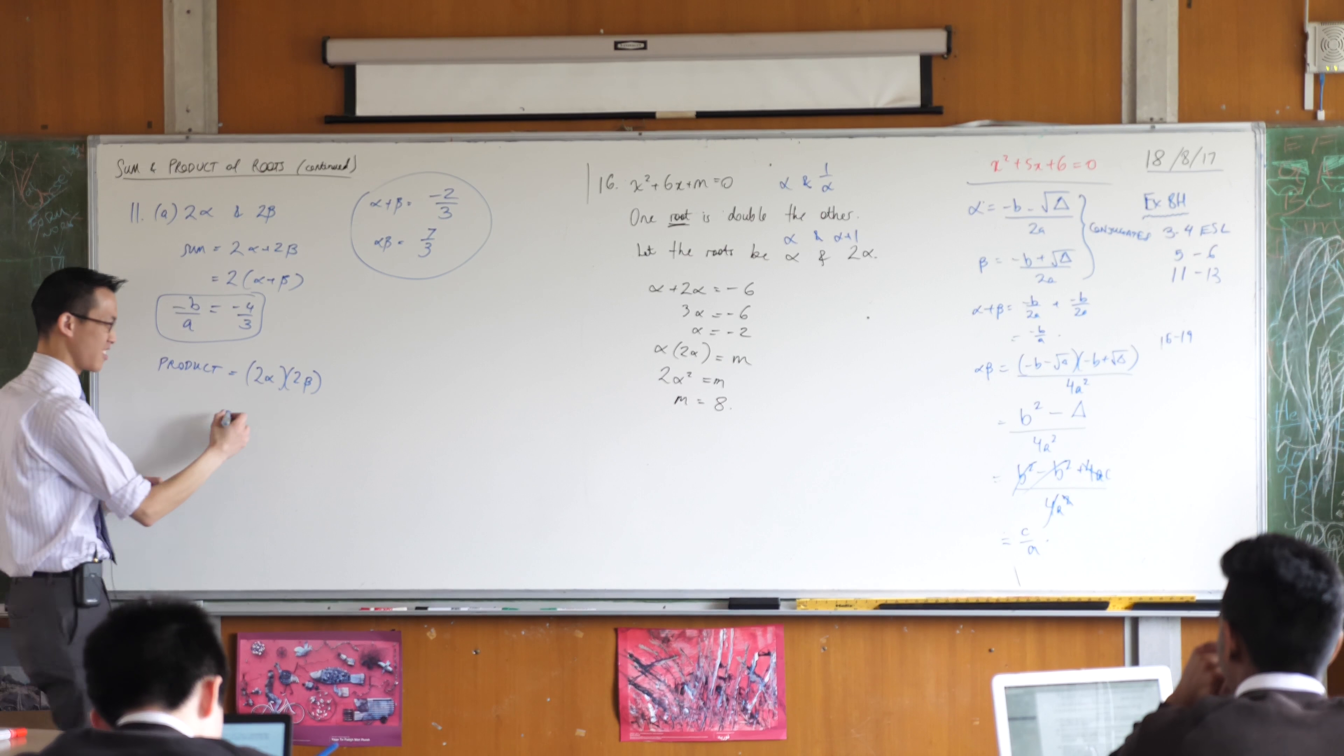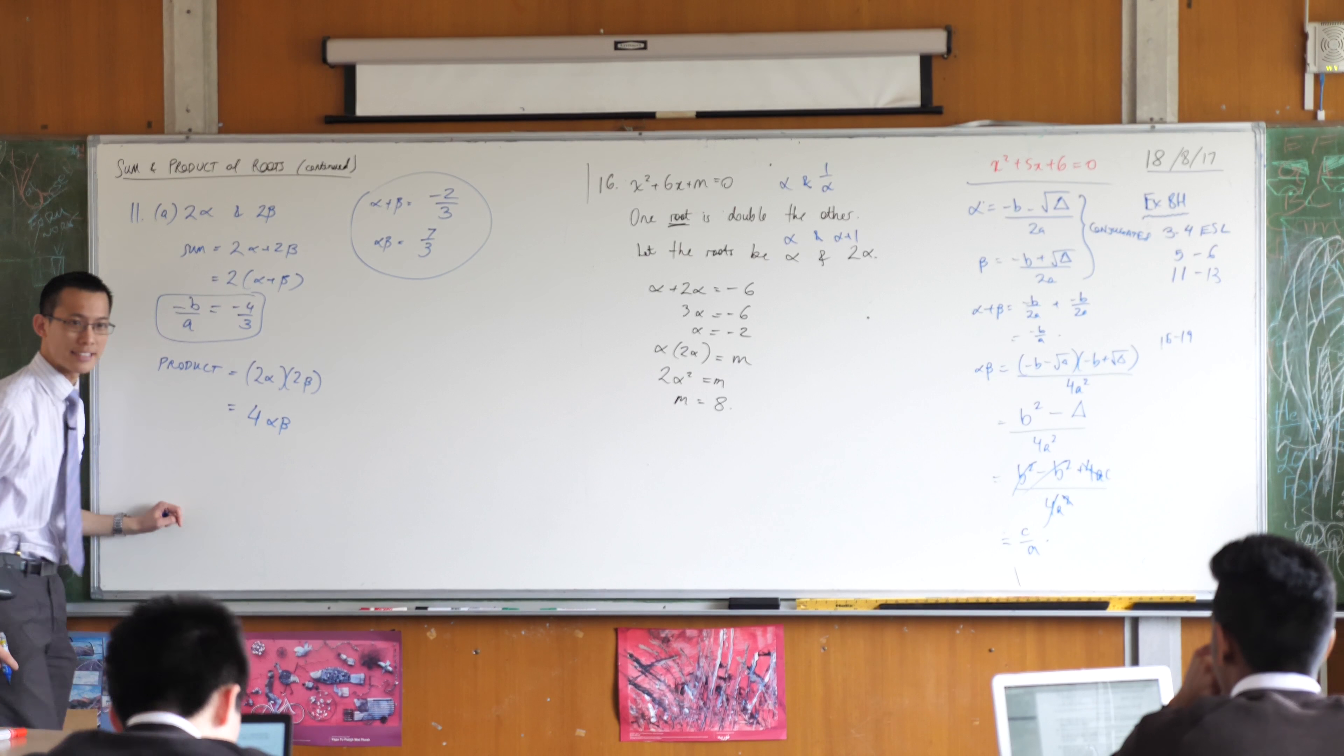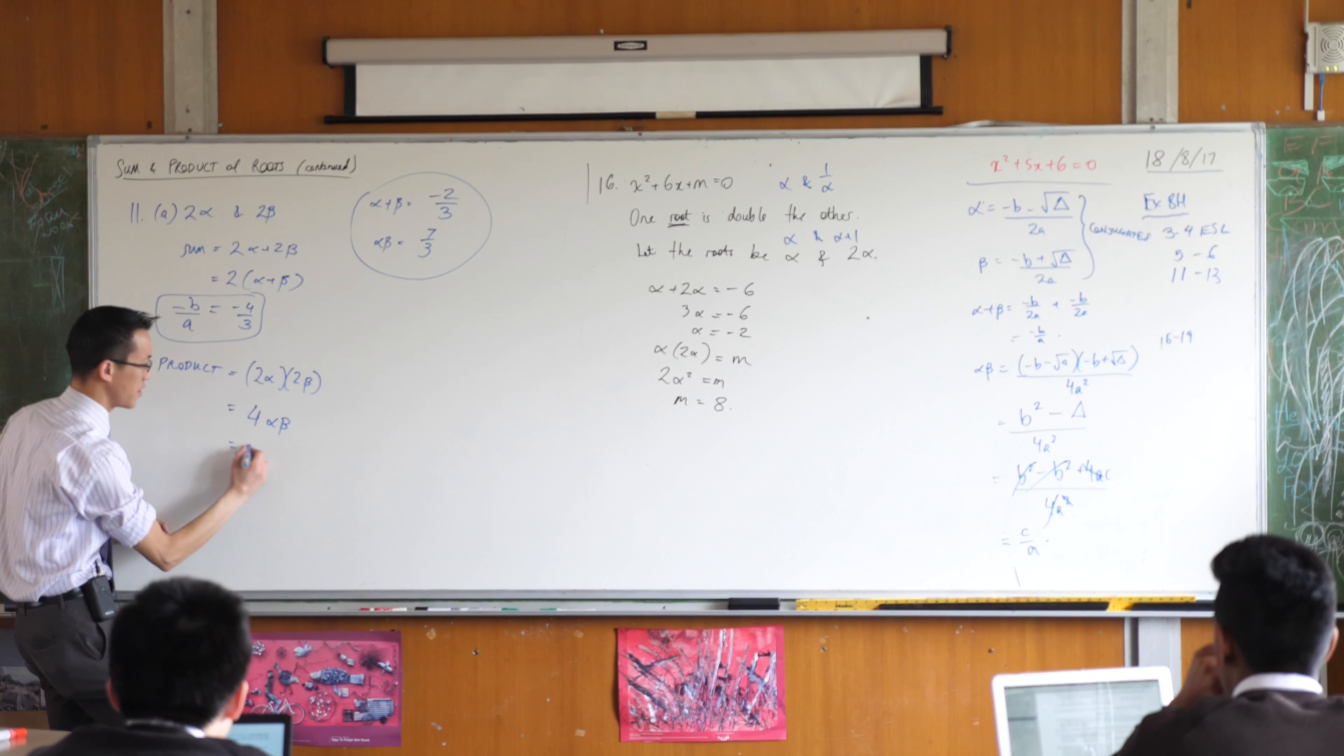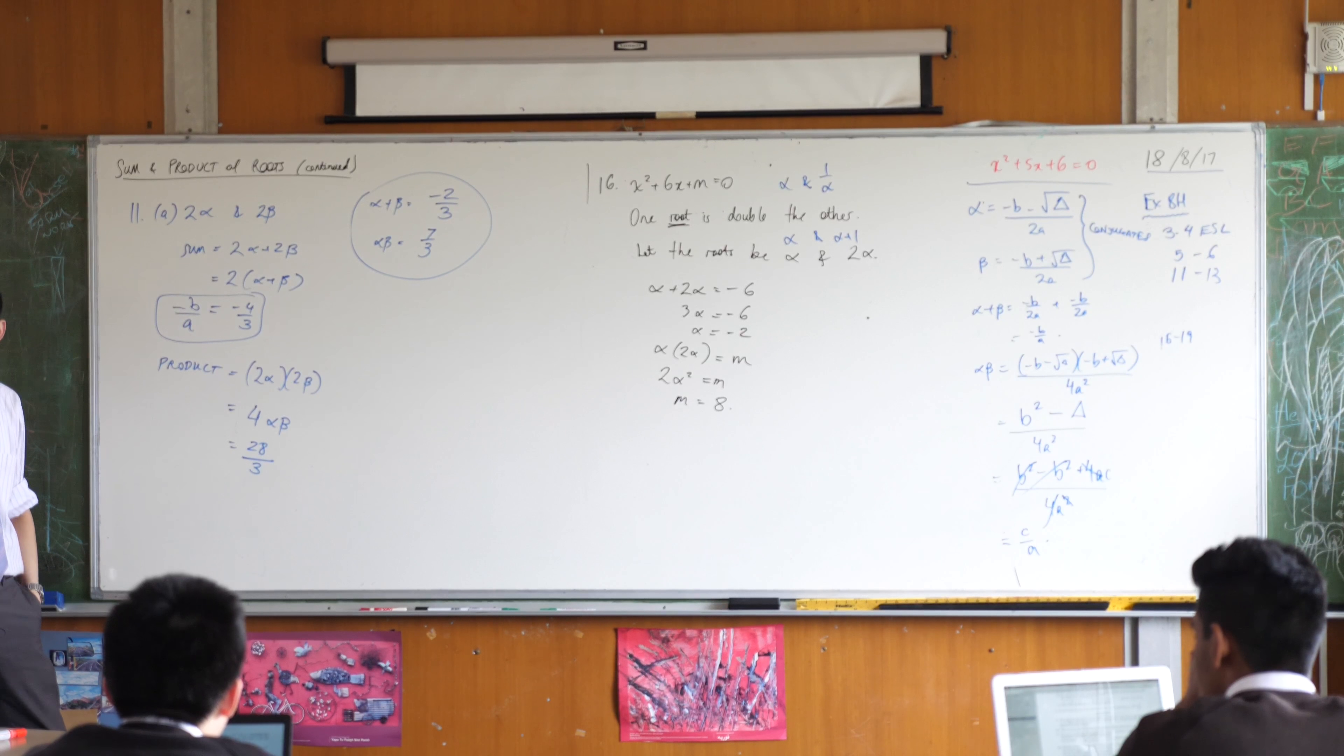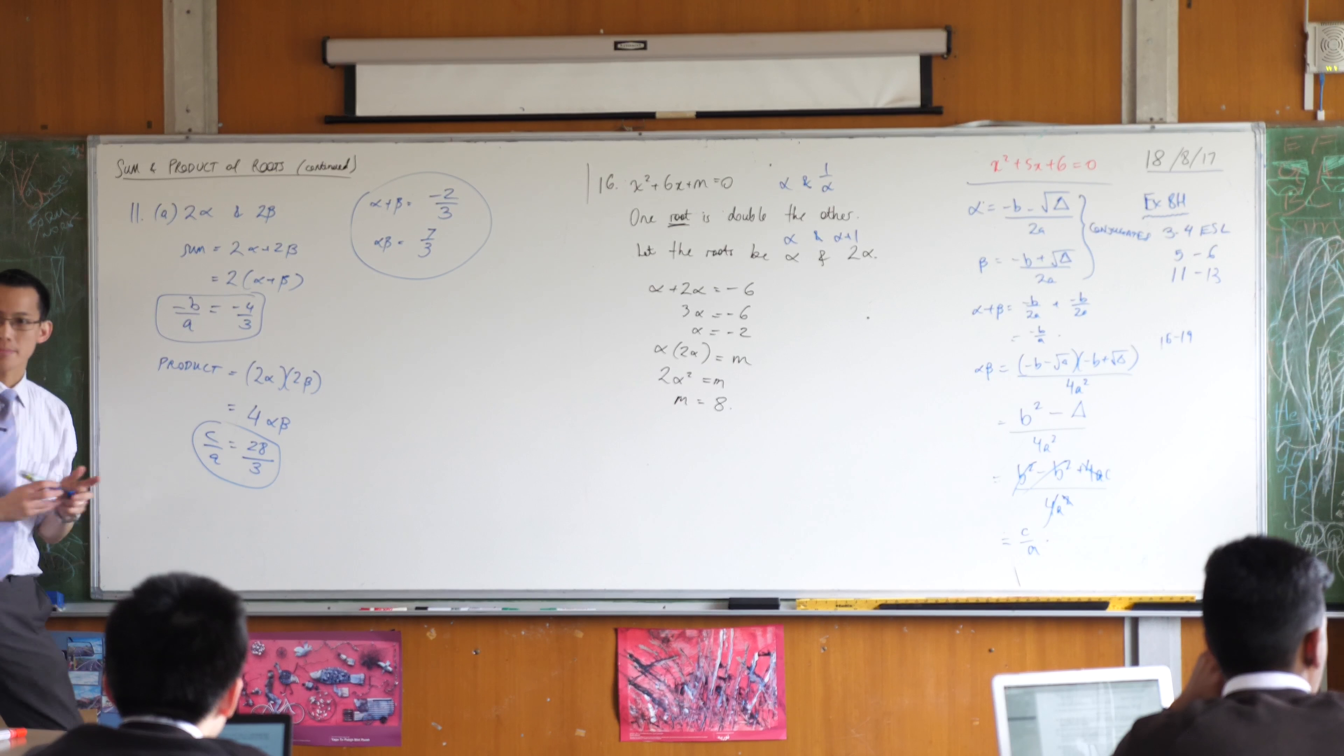You okay with that? And I know what this is. 2 times 2 is? And there's my alpha and beta hanging out at the end. And I know what this is equal to. That's alpha beta. So this is 4 alpha beta. And for my new quadratic equation, c over a is equal to this.